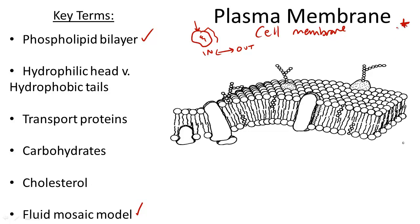Without the plasma membrane, the contents of the cell would not work as a system. Think of it like the bouncer at a concert — the bouncer, like this membrane, chooses who enters and who leaves the show, so that it runs smoothly.